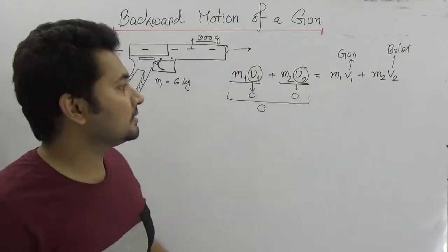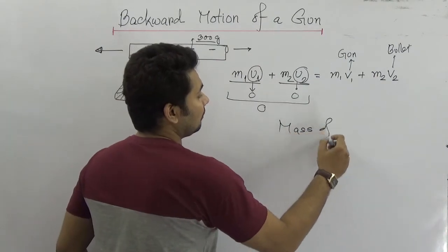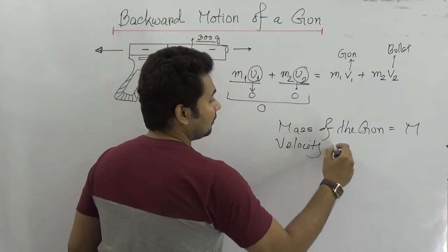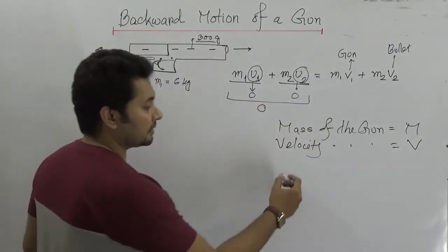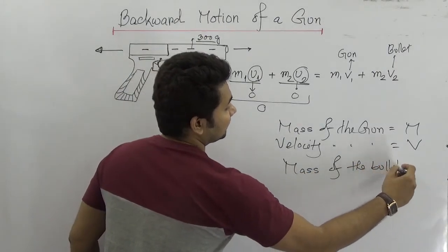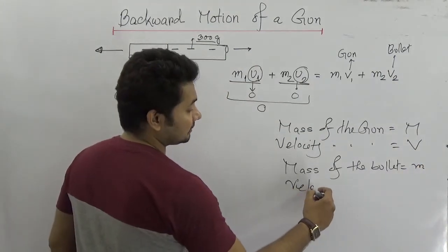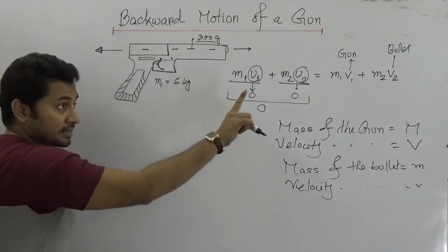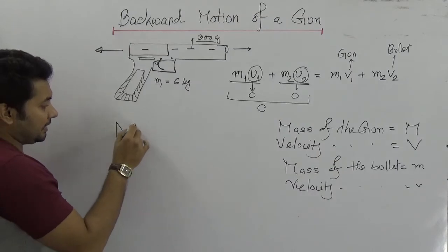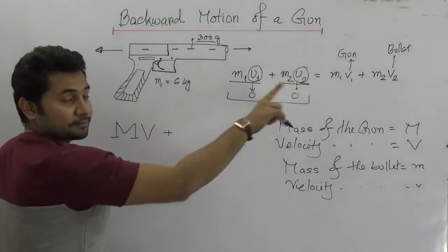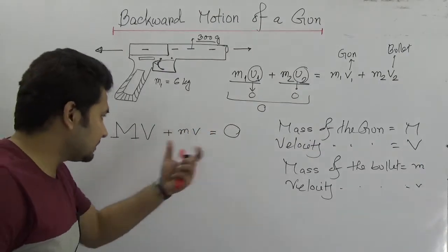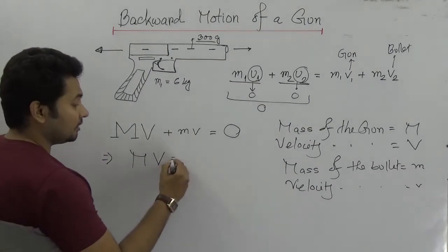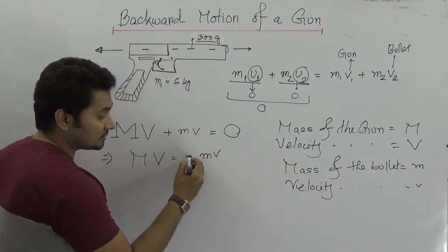We can express: the mass of the gun we write as capital M, the velocity of the gun as capital V; the mass of the bullet we write as small m, and the velocity of the bullet as small v. Hence we can write: M·V + m·v = 0. So we can say that after the shot, the momentum of the gun and the bullet are equal and opposite.